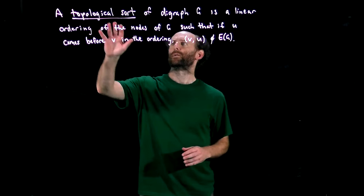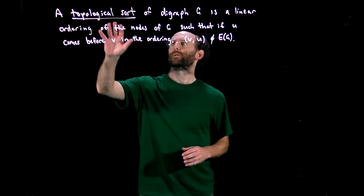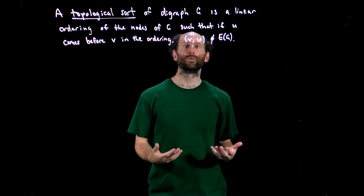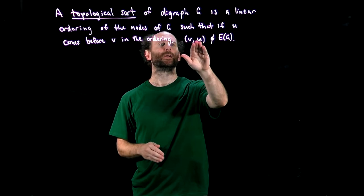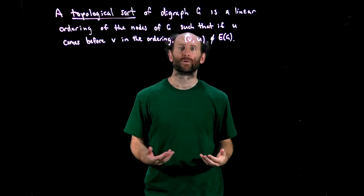The formal definition looks like this. A topological sort of a digraph G is a linear ordering of the nodes of G such that if node U comes before node V in the ordering, then we don't have an arc that goes from V back to U. So VU is not in the arc set of G. We also call this a topological order or a linear order.